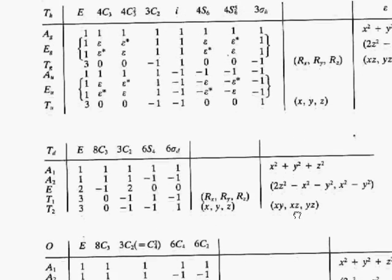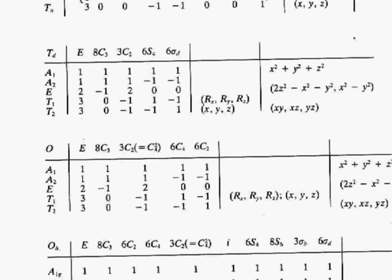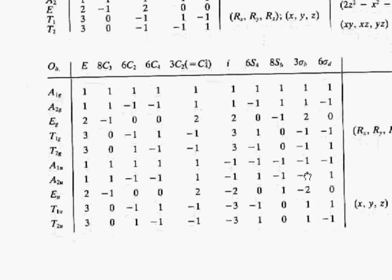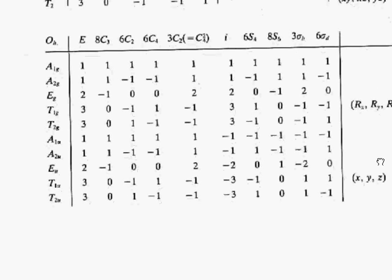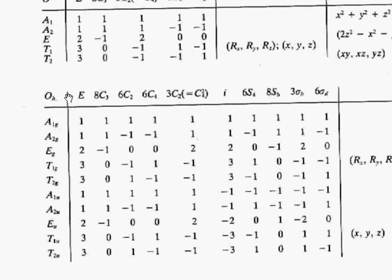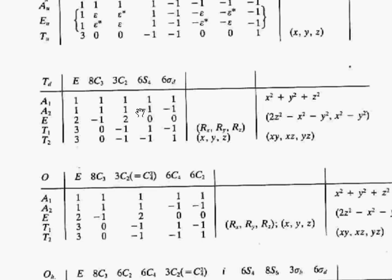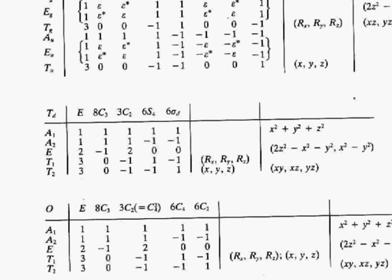You have Td, which is the tetrahedral group — stuff like methane or ammonium is in that. And then you have the octahedral point group, Oh. That one's pretty easy to pick also: basically if you have an octahedral molecule with all the same ligands on the metal. You want to be able to recognize Oh — a plain octahedral molecule with all the same ligands — and Td, a plain tetrahedral molecule with all the same ligands.